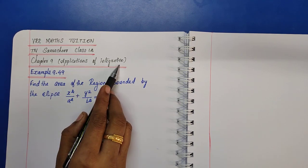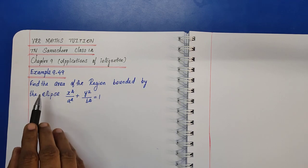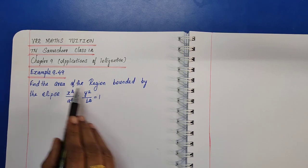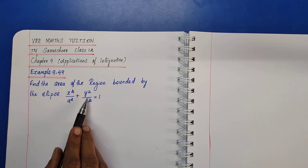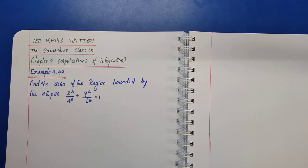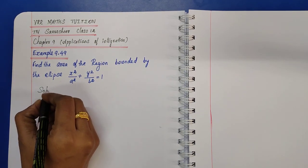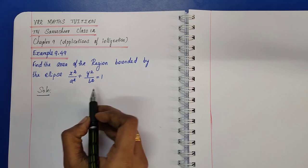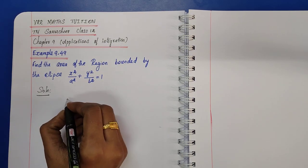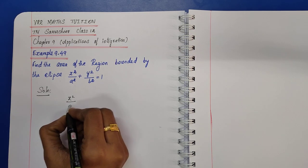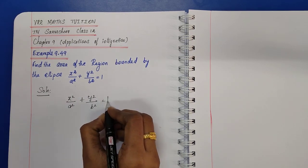Chapter 9: Applications of Integration, Example 9.49. The question is: find the area of the region bounded by the ellipse x²/a² + y²/b² = 1.